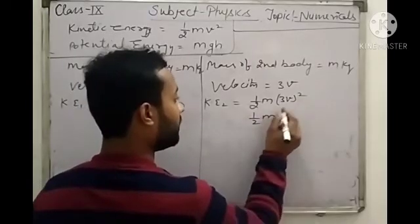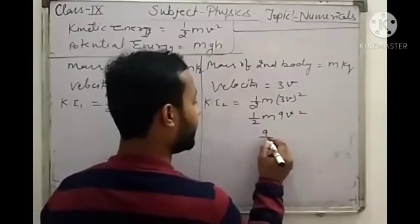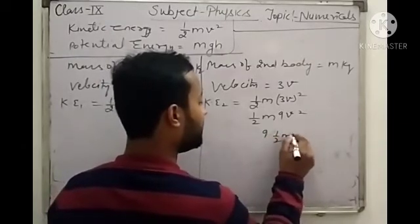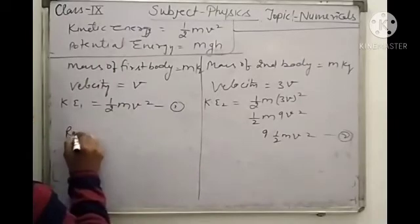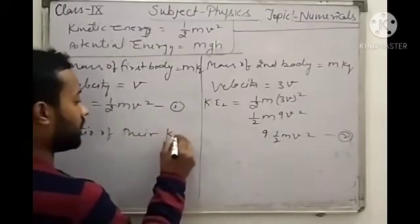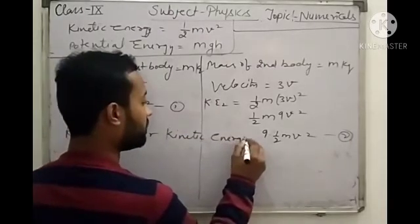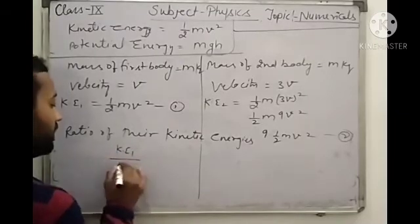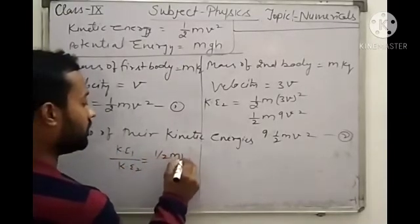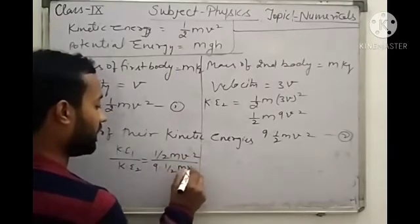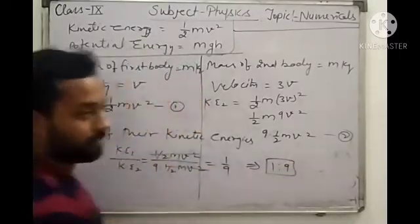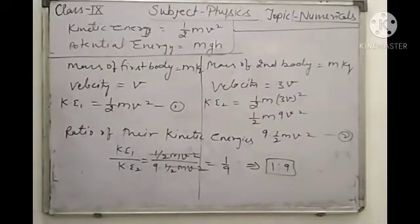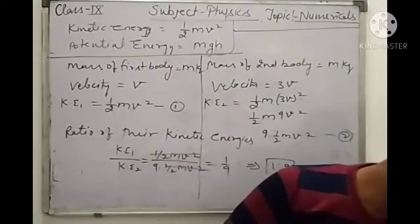The kinetic energy of the first body is ½mv². The kinetic energy of the second body is ½m(3v)² = ½m × 9v² = 9 × (½mv²). Taking the ratio of KE₁ to KE₂: (½mv²) / (9 × ½mv²) — the common terms cancel — giving a ratio of 1 to 9. This is the ratio of the kinetic energies of two bodies of equal mass moving at velocities v and 3v.